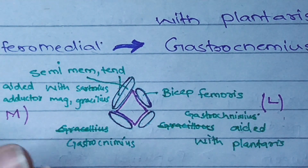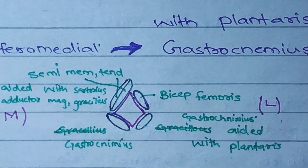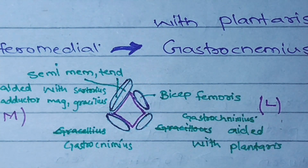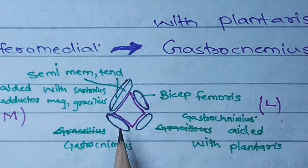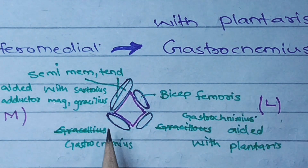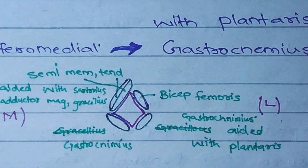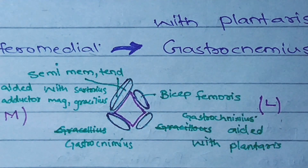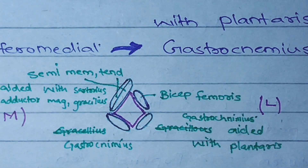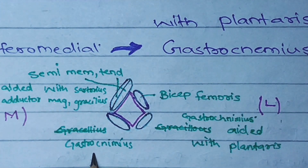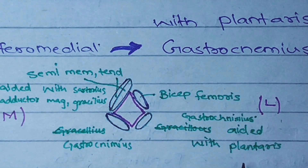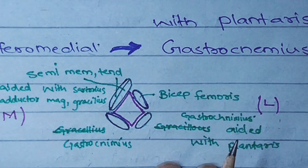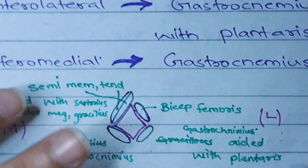On the superior medial side, the upper muscle is semi-tendinosus and the lower is semi-membranosis. The inferomedial boundary is the gastrocnemius alone. On the inferior lateral side, gastrocnemius is aided with the plantaris muscle. These are our four boundaries.